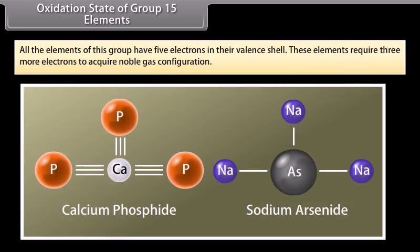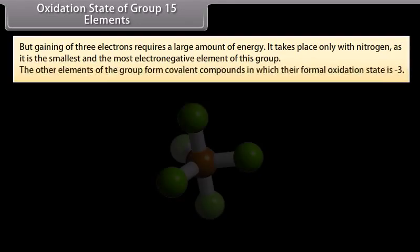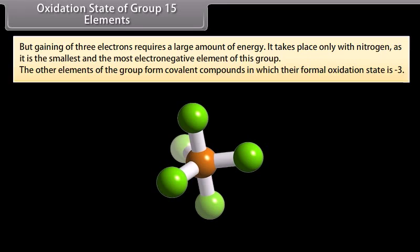All elements of group 15 have 5 electrons in their valence shell and require 3 more electrons to acquire noble gas configuration. However, gaining 3 electrons requires a large amount of energy; this takes place only with nitrogen, as it is the smallest and most electronegative element of the group. The other elements form covalent compounds in which their formal oxidation state is minus 3.